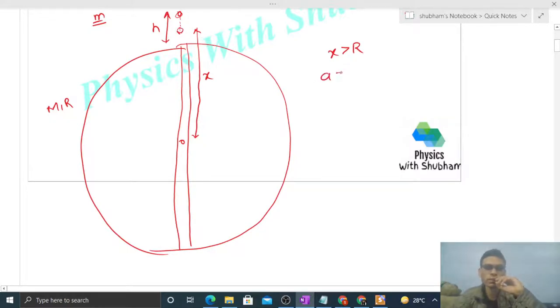If x is greater than capital R, meaning the particle is outside the Earth's surface, the acceleration will be g capital R squared divided by x squared. This is the acceleration due to gravity outside the Earth. And inside, when x is less than capital R, the acceleration will be g x by capital R.